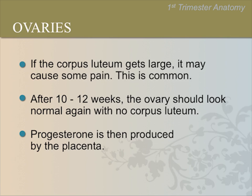If the corpus luteum gets large, it may cause pain. This is common. After 10 to 12 weeks, the ovary should go back to a normal appearance with no visible corpus luteum. Progesterone is then produced by the placenta.